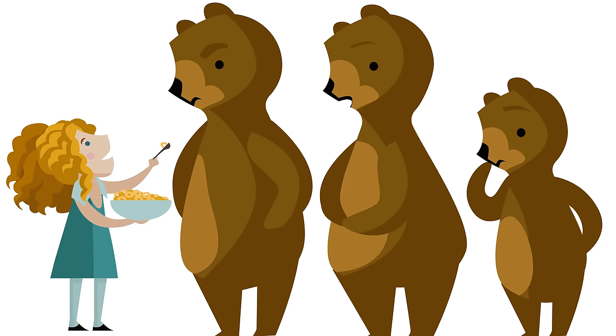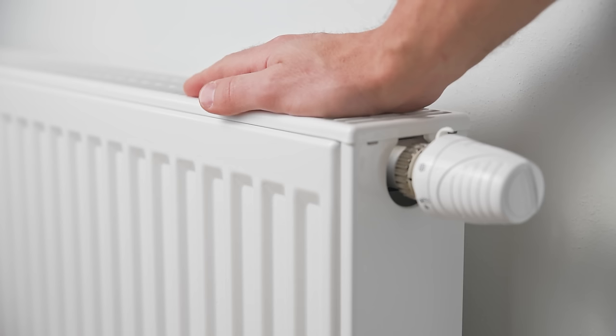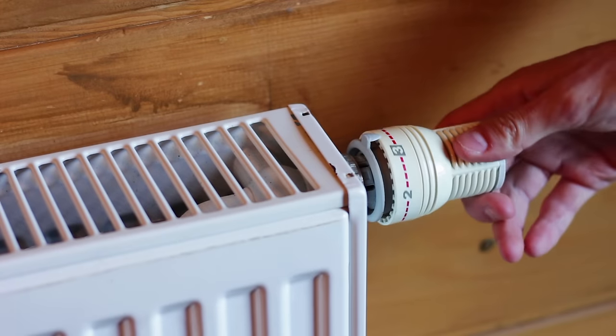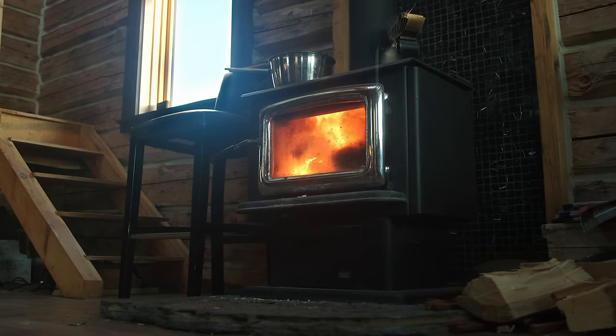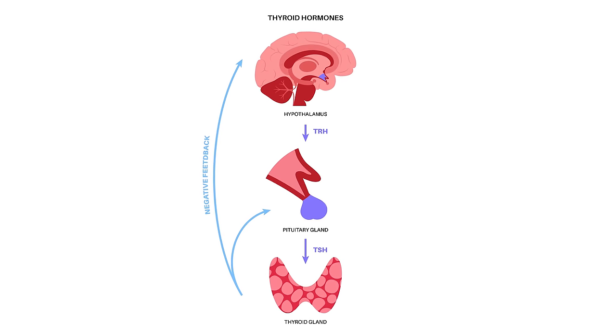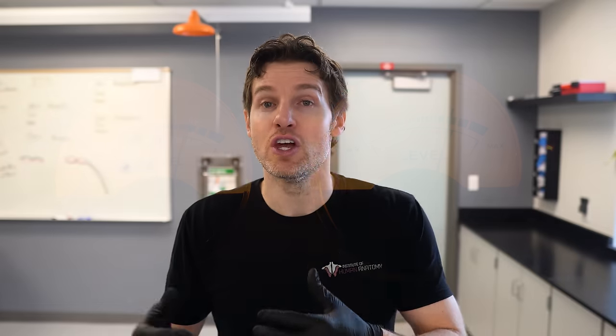Back to the regulation of thyroid hormones — we want the Goldilocks principle: not too few, not too many, just the right range in the bloodstream. Using the thermostat analogy: if the house is at 69 degrees and dad sets it to 70, the furnace kicks on until the temperature hits 70, then shuts off. Similarly, if thyroid hormone levels in the blood are a little low, the pituitary and hypothalamus detect this and activate the thyroid gland to secrete more hormones until they reach proper levels — then it shuts off. This tightly regulates thyroid hormone levels to avoid major fluctuations.